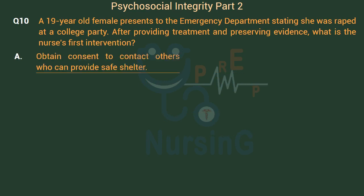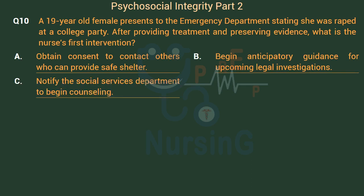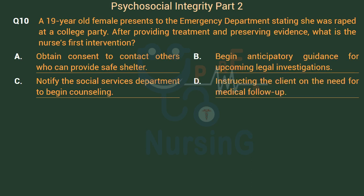Option A: Obtain consent to contact others who can provide safe shelter. Option B: Begin anticipatory guidance for upcoming legal investigations. Option C: Notify the social services department to begin counseling. Option D: Instructing the client on the need for medical follow-up.